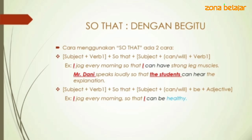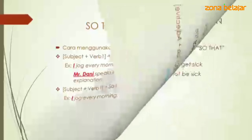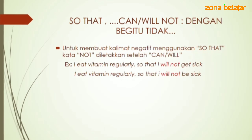Contoh: I jog every morning so that I can be healthy — 'healthy' kata sifat, sehat, jadi sebelumnya ada 'be'. 'I' di depan sebagai subjek pertama dan 'I' setelah 'so that' sebagai subjek kedua. Untuk kalimat negatif menggunakan 'so that', 'not' diletakkan setelah 'can' atau 'will'. Contoh: I eat vitamin regularly so that I will not get sick — saya mengkonsumsi vitamin secara teratur dengan begitu saya tidak akan sakit.